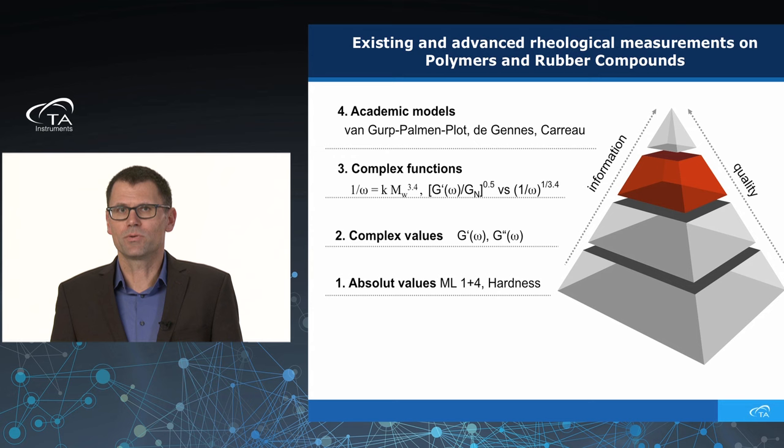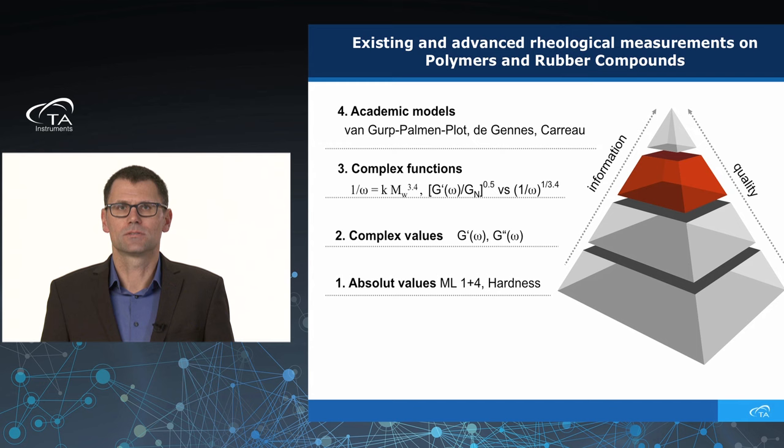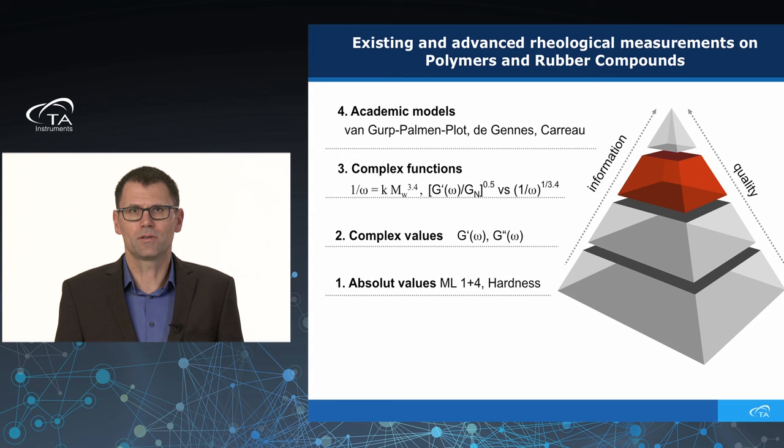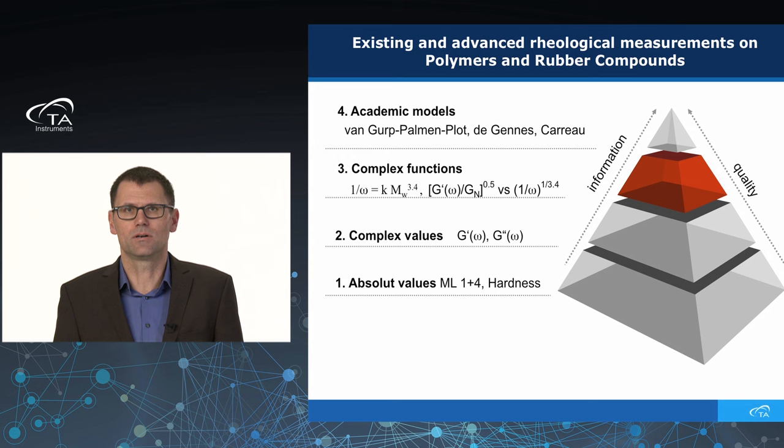Typically, what people are doing every day is measuring the Mooney viscosity, the hardness, the density — they measure absolute values. The next step is to measure complex values. If you remember, you can do a cure curve, measure G prime, G double prime, or S prime and S double prime, and calculate the tangent delta. But this is mainly done at one shear rate, one frequency, or one strain.